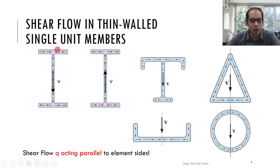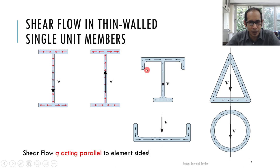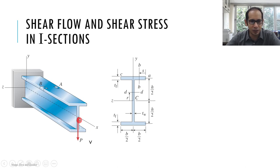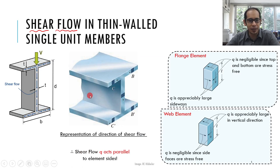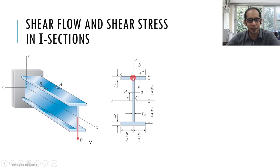Before deriving the magnitudes, recall the water flow analogy: the direction of V coincides with the direction water pours. Water comes in from the flange edges, flows to the center, and exits through the web downward — similarly for other section shapes. For the I-section, let us now go ahead and take a look at the derivation of how this q or τ varies along the section.